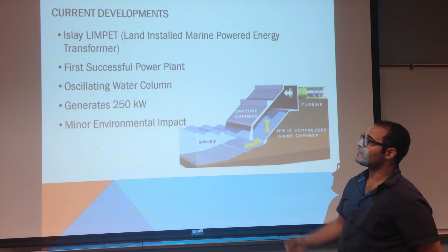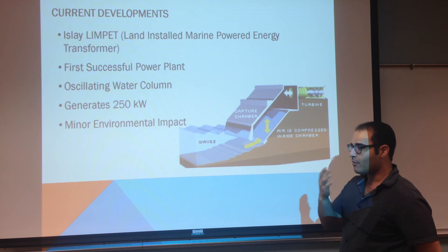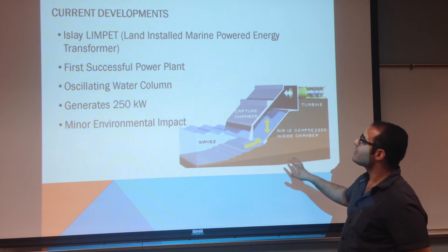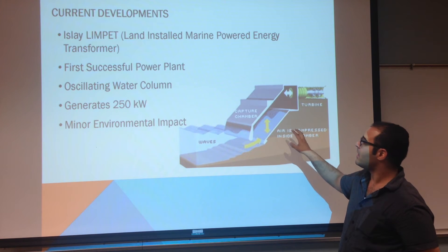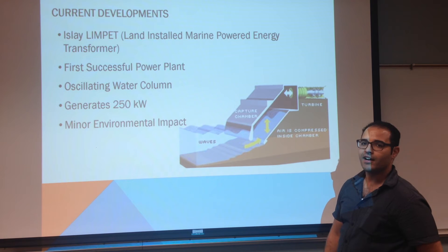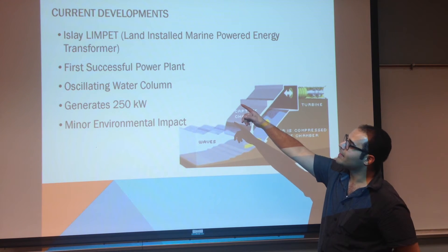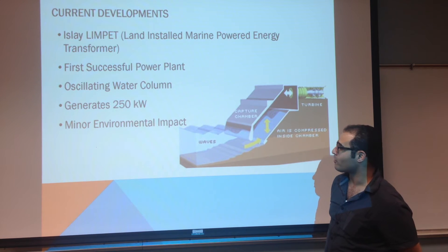Now we're going to discuss current developments, covering three key developments. First is the first successful wave power plant, installed on the island of Islay off the coast of Scotland, called the Islay Limpet. Limpet stands for Land Installed Marine Powered Energy Transformer.